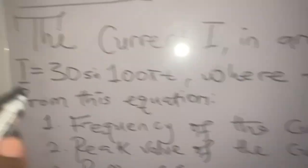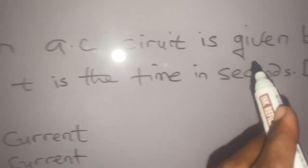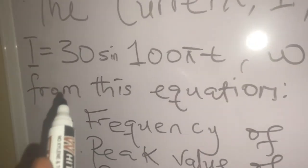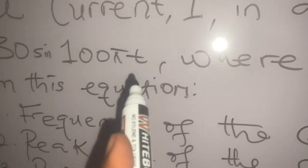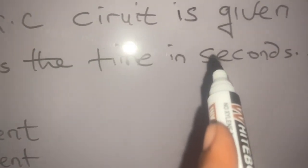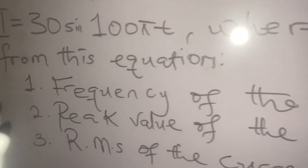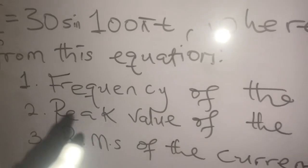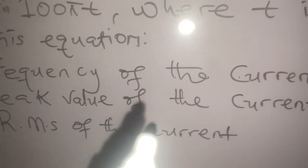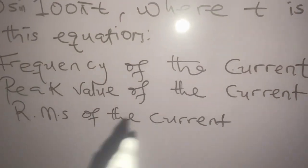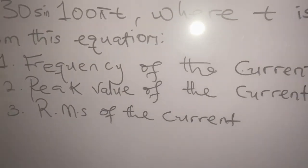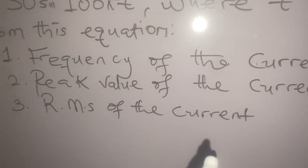The current I in an AC circuit is given by the equation I equals 30 sin(100πt), where t is in seconds. Deduce the following from this equation: number one, frequency of the current; number two, peak value of the current; and number three, the root mean square of the current.